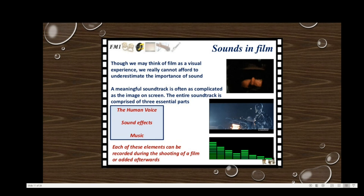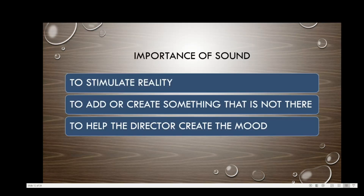The three essential parts of a film's entire soundtrack are: human voice, sound effects, and music. Each of these elements can be recorded during the shooting of a film or added afterwards. Regarding the importance of sound in cinema, there are three main uses: to stimulate reality, to add or create something that is not there, and to help the director create the mood — for example, if it is going to be a heavy storm, that is very clear from the sound given.